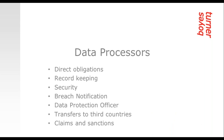One of the most significant changes introduced by GDPR is that data processors have direct obligations for the first time. Whilst the Data Protection Act only imposes direct compliance obligations on controllers, we can see that data processors now have a number of obligations such as record keeping, security, breach notification, an obligation to have a DPO if they meet the requirements, and an obligation to comply with the rules regarding transfers to third countries. Data subjects can also bring an action against a controller or processor, and they can face direct enforcement and penalties.